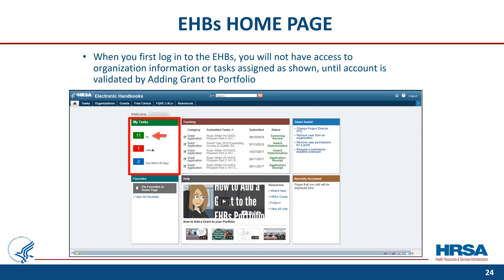This is a screenshot of the EHBs landing page or home page — the screen you see when you first log in each time. The very first time you log in to the EHBs, you will not have access to organization information until your account is validated by adding your grant to your portfolio, which we will discuss next. Until that is done, when you log in, you will see you have no tasks assigned to you. A help section, smart assist section, and favorites section are also displayed on the homepage.